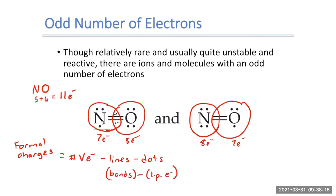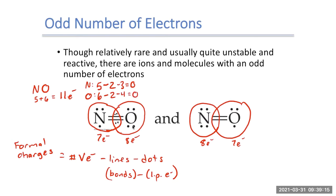Looking at structure one: nitrogen has five valence electrons, minus two bonds, minus three lone pair electrons, giving a formal charge of zero. Oxygen has six valence electrons, minus two bonds, minus four lone pair electrons, also giving a formal charge of zero. Both atoms have zero formal charges — a pretty happy configuration.